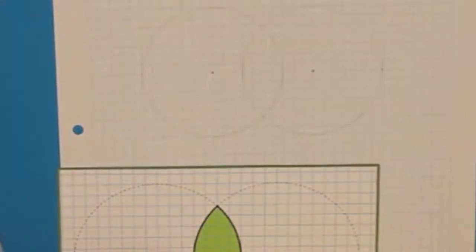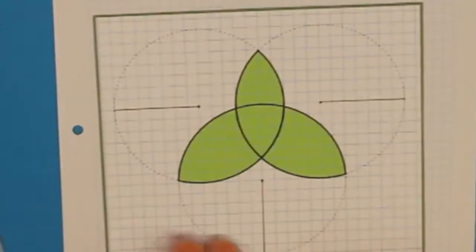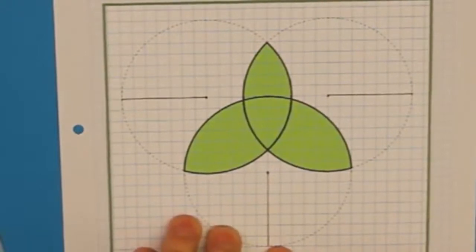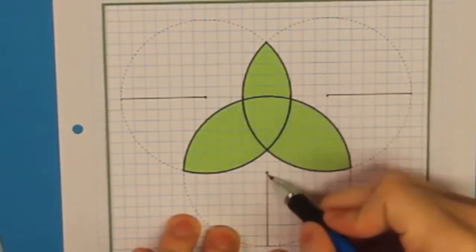Jetzt fehlt uns eigentlich nur noch der dritte Kreis. Beim dritten Kreis müssen wir wieder zuerst den Mittelpunkt bestimmen. Das machen wir am besten wieder mit Kästchen zählen. Ich nehme jetzt einfach mal den Mittelpunkt des rechten Kreises als Orientierungspunkt her.